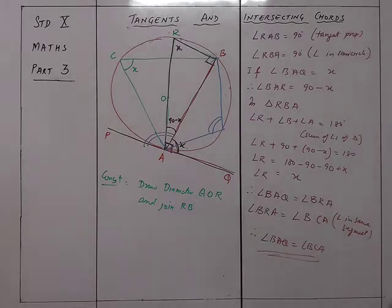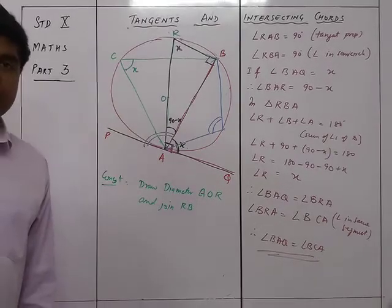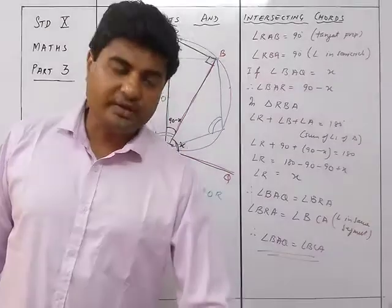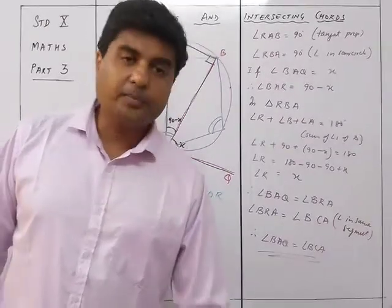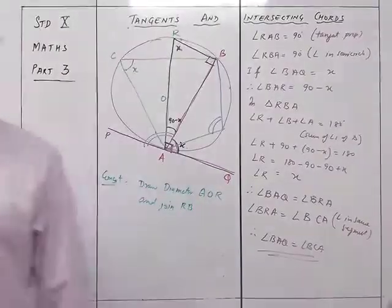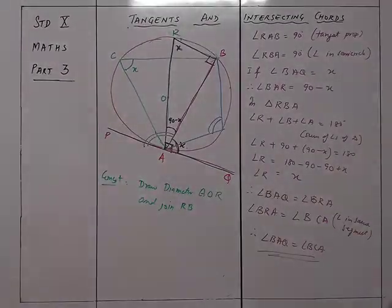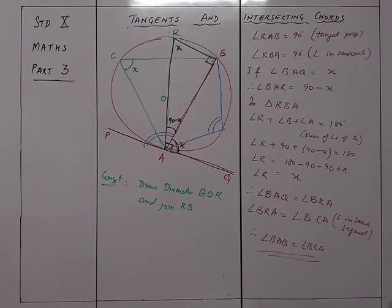So that was theorem 13 — the angle between the tangent and the chord through the point of contact is equal to the angle in the alternate segment. Very important: the angle formed by the tangent and the chord equals the angle formed by that chord in the alternate segment. We go to the next video for one more theorem about tangent and intersecting chord.